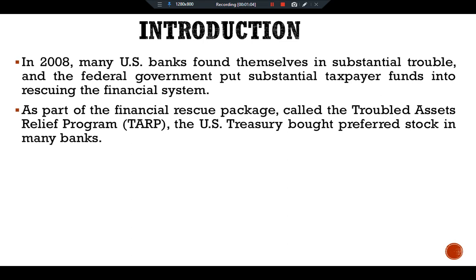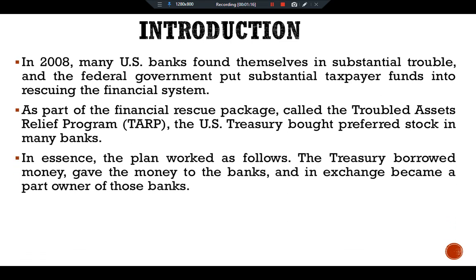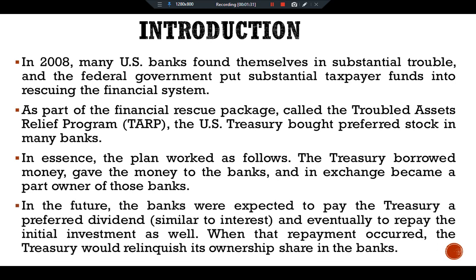As part of the financial rescue package called the Troubled Asset Relief Program, TARP, the U.S. Treasury purchased stock in many banks. The Treasury borrowed money and gave that money to the banks; in exchange, it became a part owner of those banks. In the future, the banks were expected to pay the Treasury a preferred dividend, similar to interest, and eventually to repay the initial investment as well.